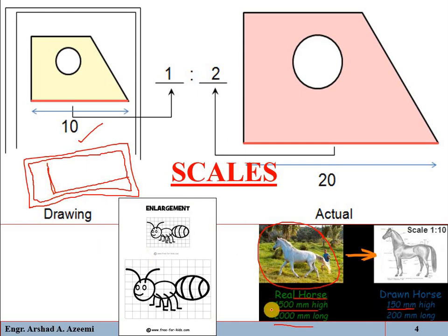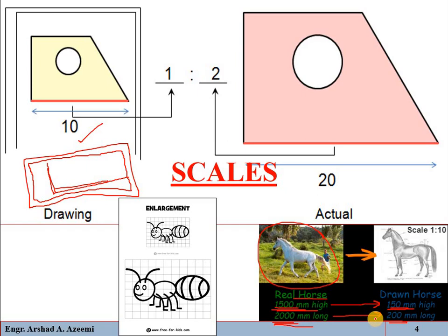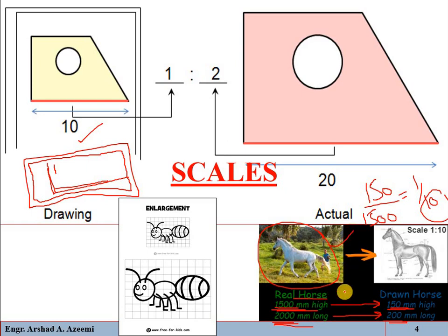So actually we draw it 150 mm high in place of 1500 mm, and 200 mm long in place of 2000 mm. We have reduced the height from 1500 to 150 and the length from 2000 to 200 — an equal proportional reduction. The drawing height is 150 mm and the actual height is 1500 mm, giving a ratio of 1 to 10. It means that one unit on the drawing represents 10 units of the actual object. This is one case where we have reduced the dimensions.